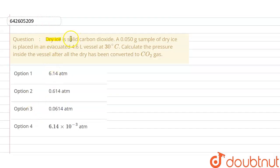Dry ice is solid carbon dioxide. A 0.05 gram sample of dry ice is placed in an evacuated 4.6 liter vessel at 30 degree Celsius. Calculate the pressure inside the vessel after all the dry ice has been converted to CO2 gas.